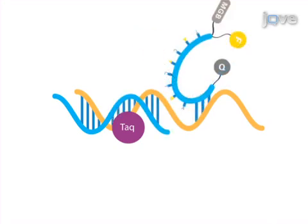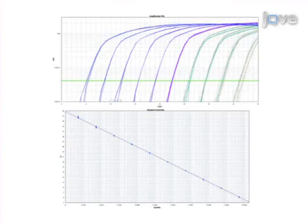When the probe dissociates, fluorescence is again quenched. Real-time PCR results are obtained that demonstrate the sensitivity, specificity, and reproducibility of this efficient assay.